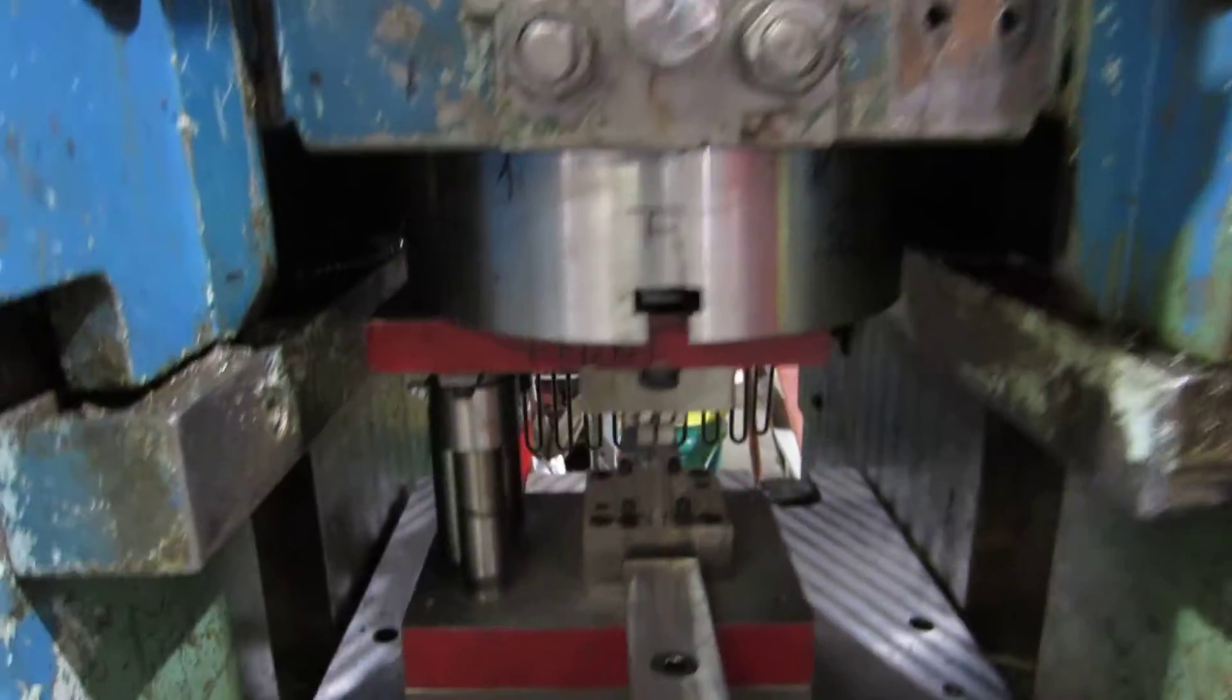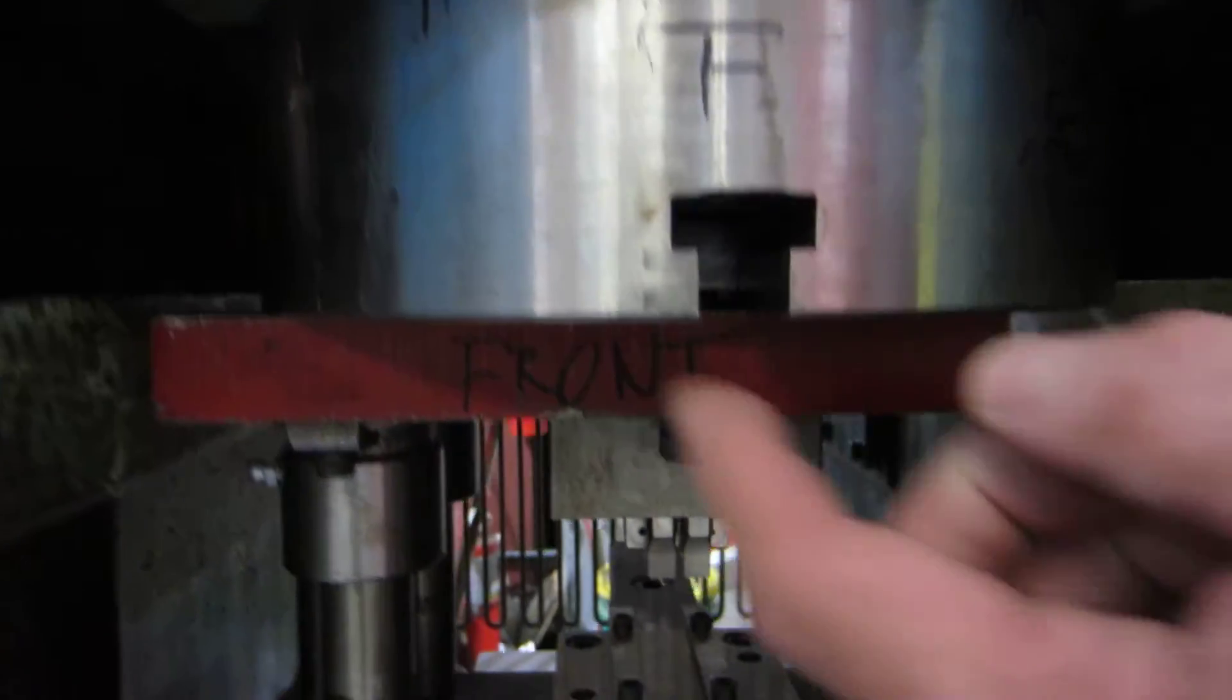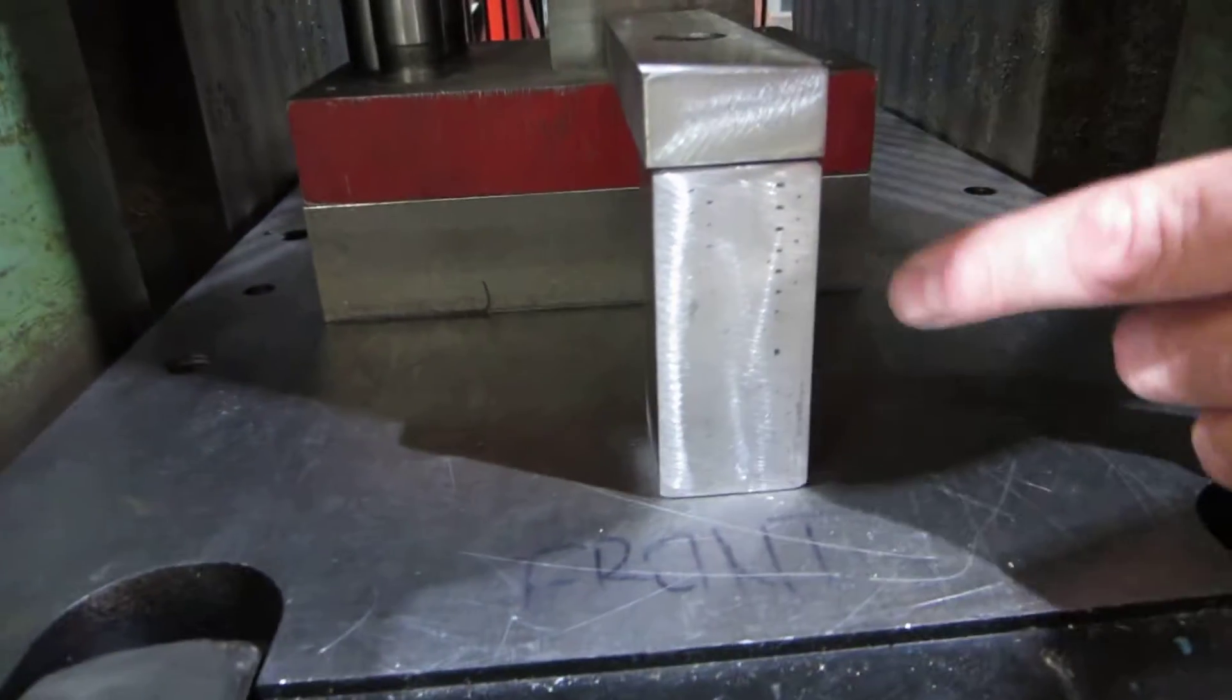Over here, you've got your die set mounted. We've got a holder here with a T-slot. So right now, we put two holes in your die set with two T-nuts and then we made some strap clamps for the bottom.